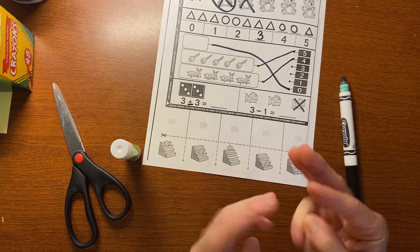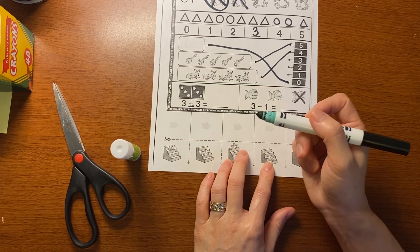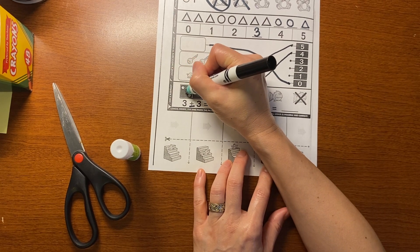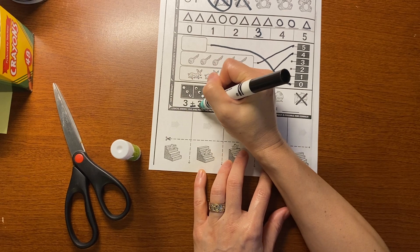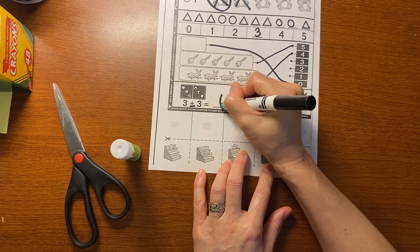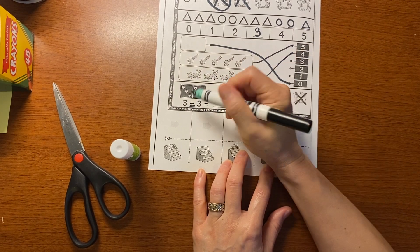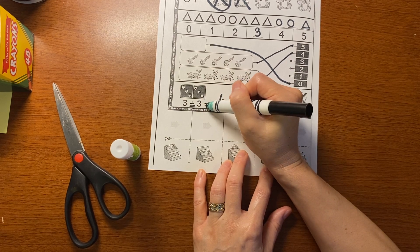So you can do it on your fingers. One, two, three, four, five, six. Or you can count the dots on the dominoes. So they put three dots here. One, two, three, four, five, six. So I know that three plus three equals six. Can everyone say that for me? Three plus three equals six.